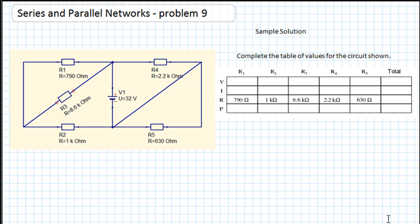Last week we had a look at some serious parallel network problems which were a little bit more complicated in as much as they weren't laid out as you would normally expect them to be. This is a sample solution for problem 9, and the reason I've chosen this is because there's a bit of a trick in this question. So what we have to do is solve the circuit and fill in the table. First thing we have to do is try and simplify the circuit so that we can break it down more easily into its series and parallel components.